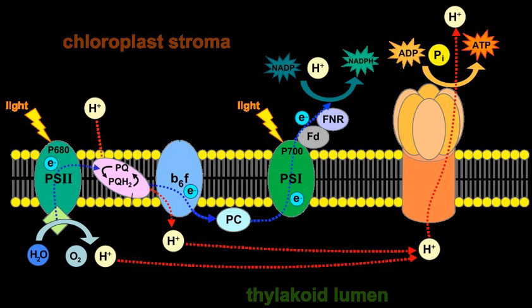In cyclic electron transport, electrons from ferredoxin are transferred via plastoquinone to a proton pump, cytochrome B6F, and are then returned to P700. NADPH and ATP are used to synthesize organic molecules from CO₂. The ratio of NADPH to ATP production can be adjusted by adjusting the balance between cyclic and non-cyclic electron transport. It is noteworthy that PSI closely resembles photosynthetic structures found in green sulfur bacteria, just as PSII resembles structures found in purple bacteria.